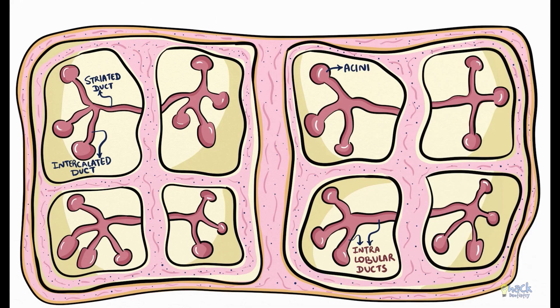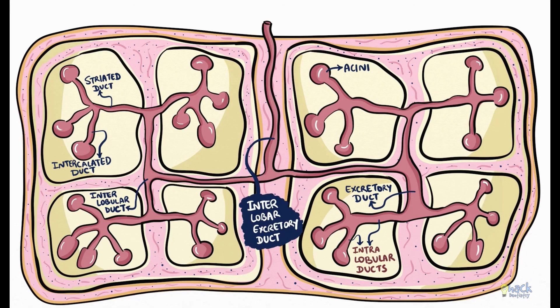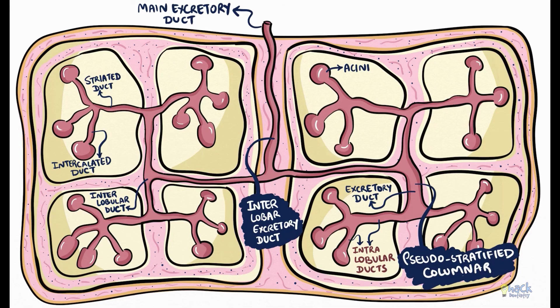Excretory ducts are present in the connective tissue septa between lobules and are called interlobular ducts. Interlobular excretory ducts fuse to form bigger interlobar excretory ducts, with the main excretory duct opening into the oral cavity. The interlobular excretory ducts are lined by pseudostratified columnar epithelium, and as the ducts get larger and approach the oral cavity, the lining becomes stratified squamous.